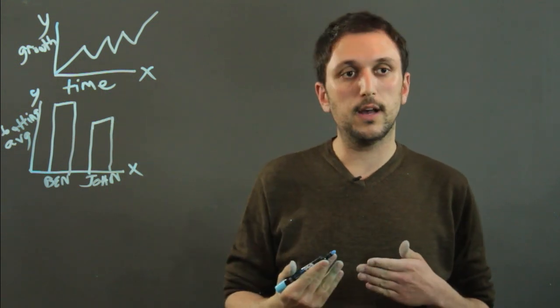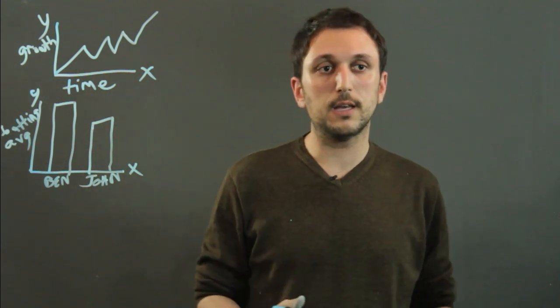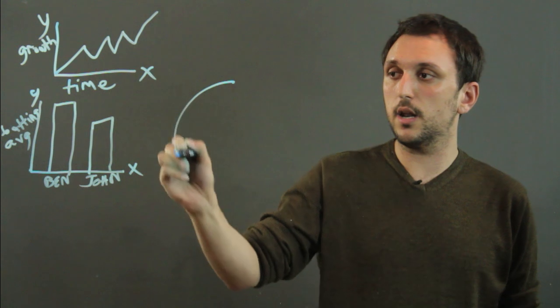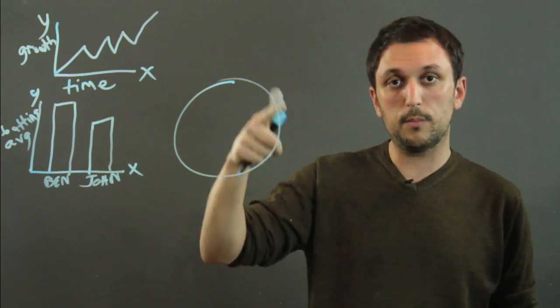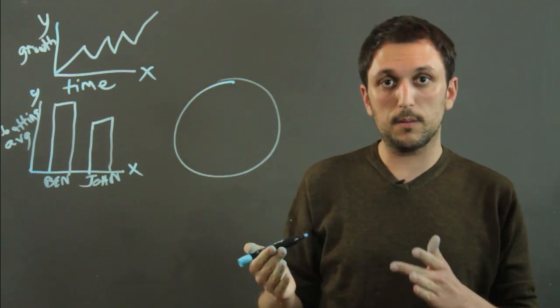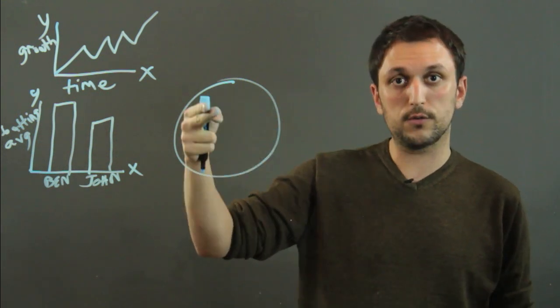The circle graph, however, is best when you're dealing with finite data. For example, if you have a budget, you can plot it on a circle graph because the circle represents 360 degrees or 100% and you're divvying things up based on that full 100%.